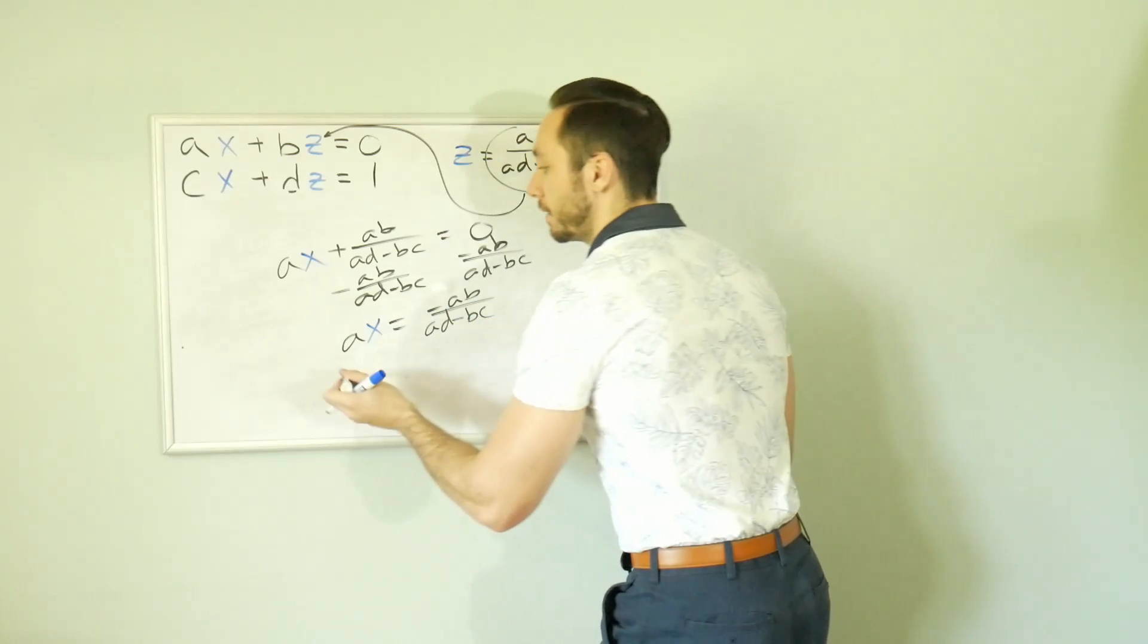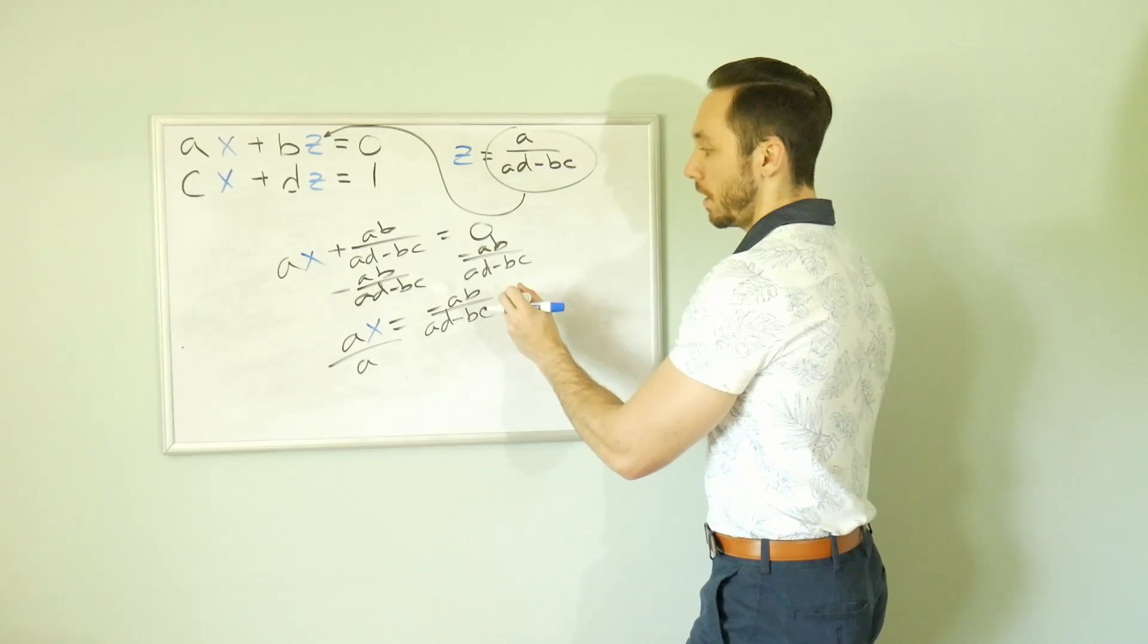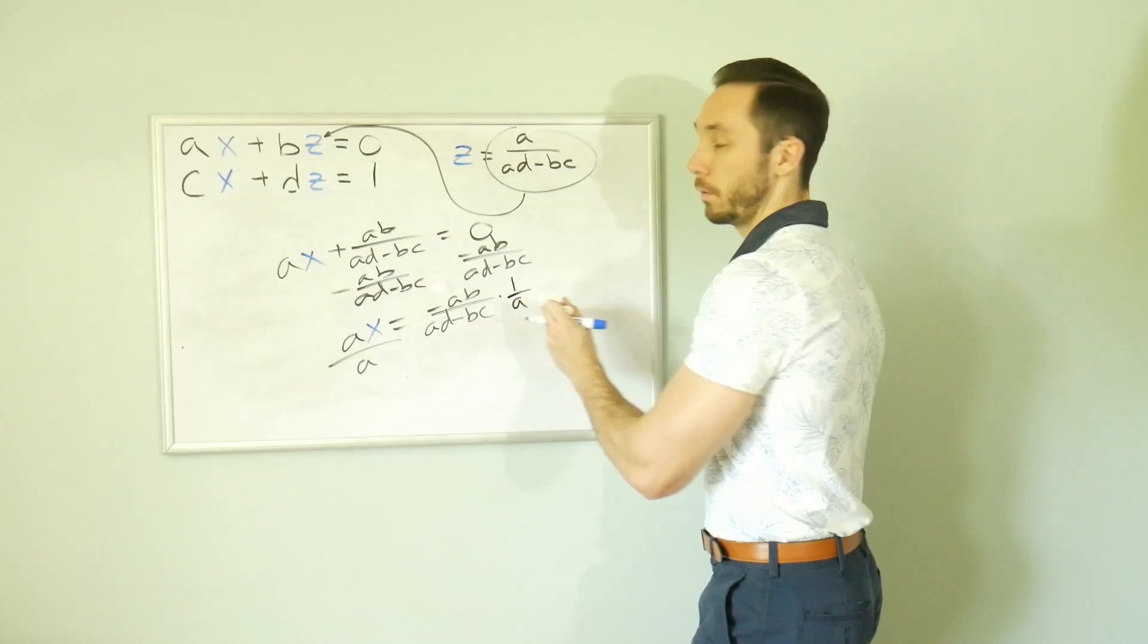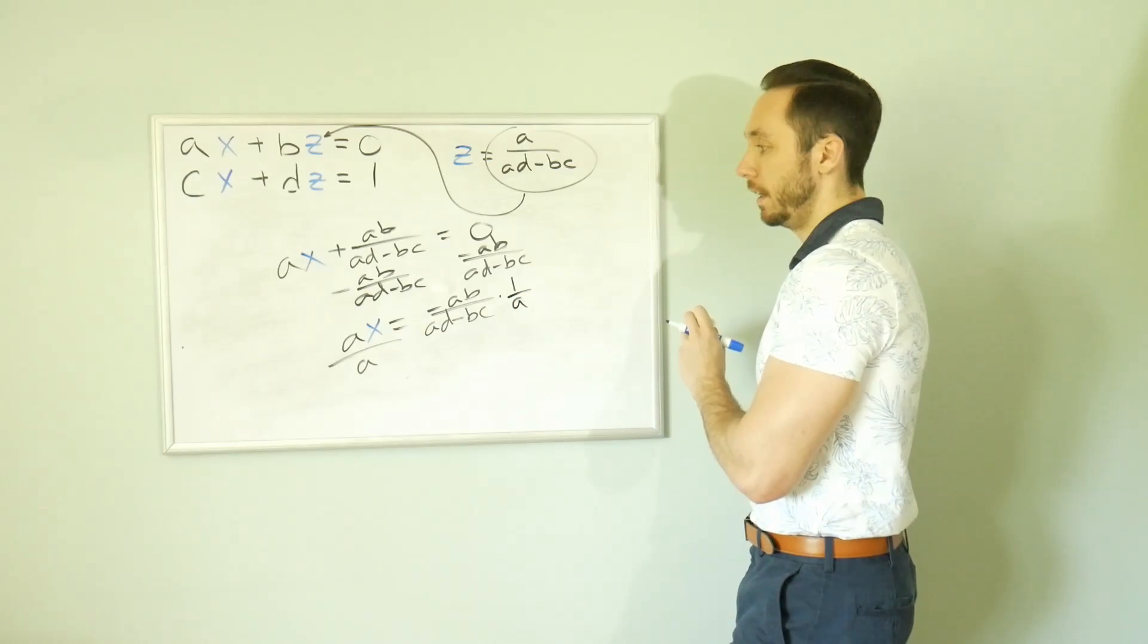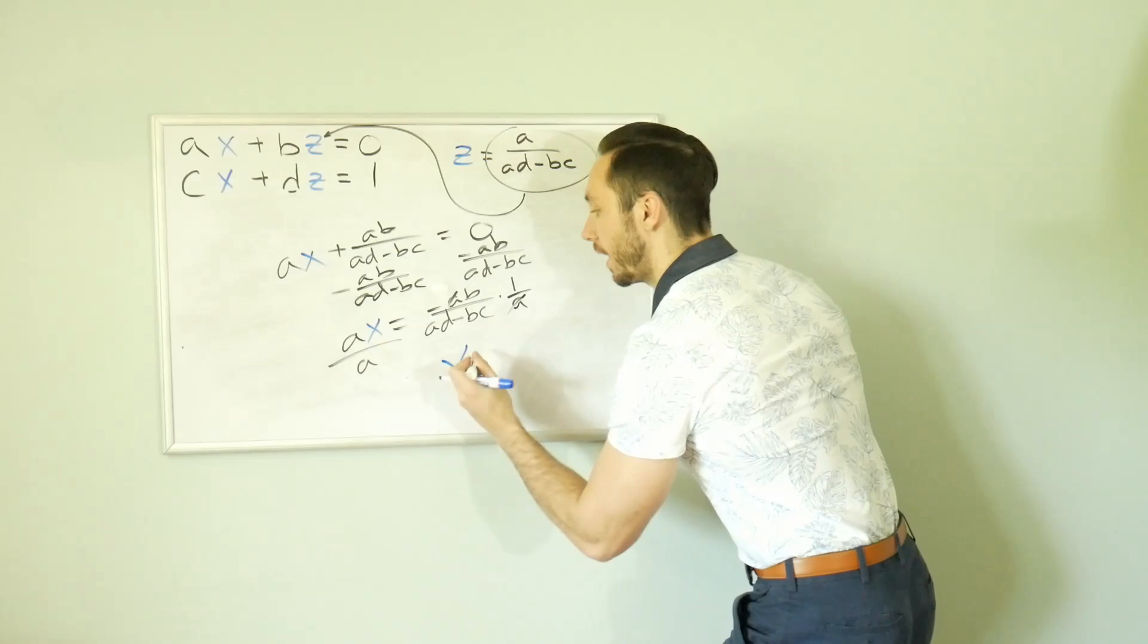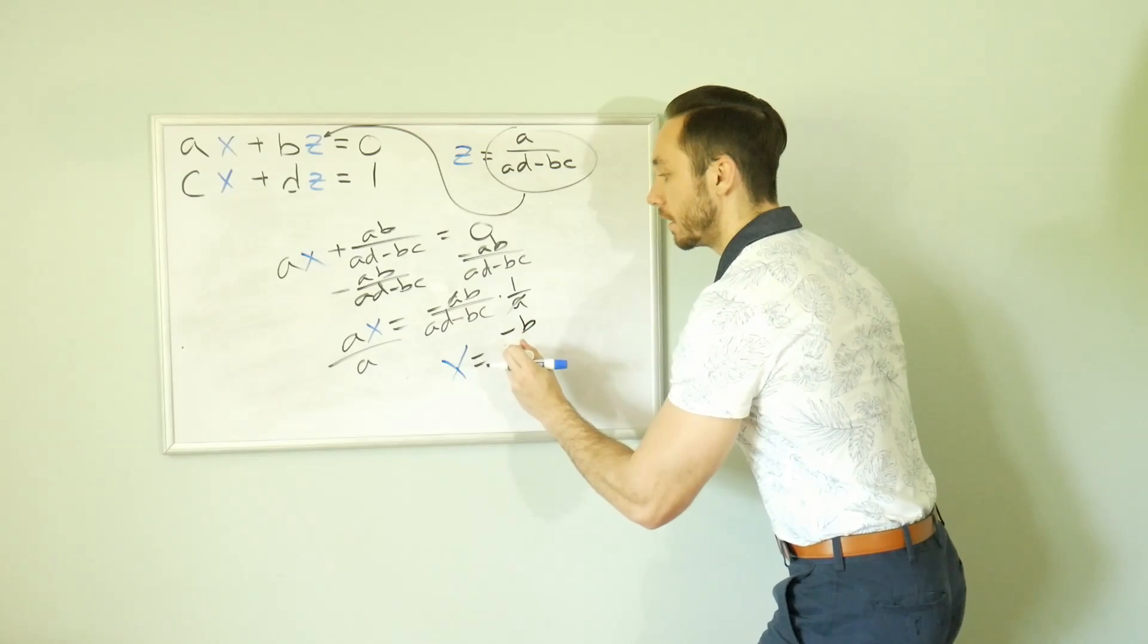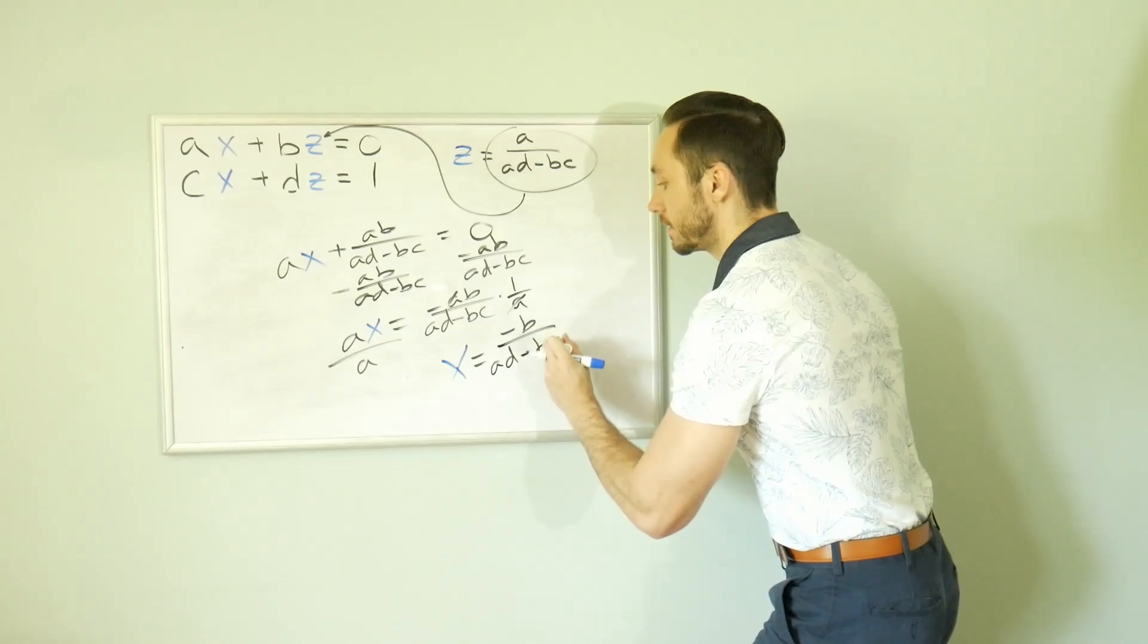Finally, divide out that A. We'll just multiply by the reciprocal. One over A. That's going to be a little bit meaner here. And actually, very clearly, A's just cancel. We end up getting X is equal to negative B over AD minus BC.